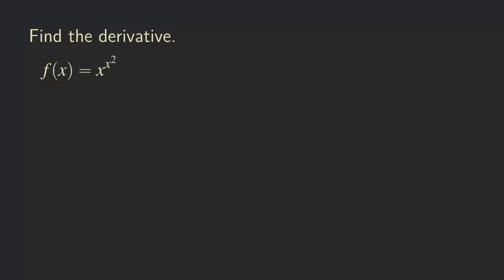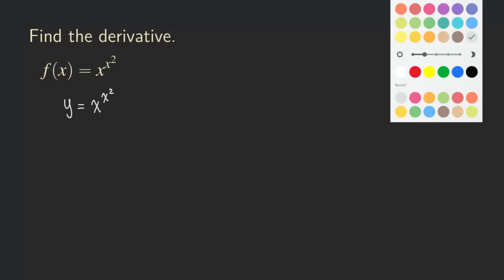There are two different ways that we can do this, and they're actually quite similar. So I'm going to show you both ways for differentiating this function. One of the ways is that we are going to first change this f(x) into a y. So we have y is equal to x to the x squared, and then we are going to take the natural log on both sides of this equation.